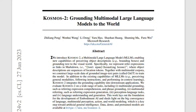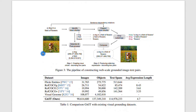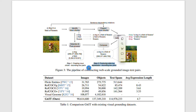Let's now take a closer look at the KOSMOS-2 model. Microsoft researchers have introduced new capabilities of perceiving object descriptions and relating textual information to the visual world. This is achieved by unlocking its grounding capability. For that, a massive dataset of image-text pairs with grounding information was constructed in two steps: the first step involved creating noun–bounding box pairs, and the second step involved producing referring expression–bounding box pairs. This dataset was combined with the multimodal corpora from KOSMOS-1 during the model's training.